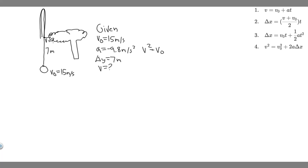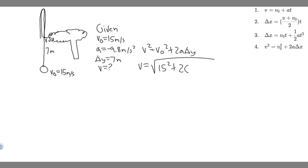So v is going to be equal to the square root of v₀² plus 2a·Δy. That's the square root of 15 squared plus 2 times minus 9.8 times 7. When you do this, you get v equals 9.37 meters per second. So this is the velocity at the tree branch.